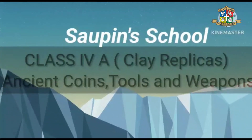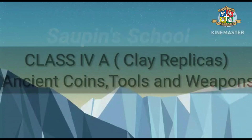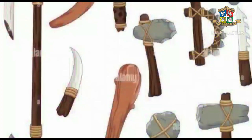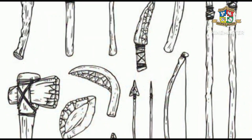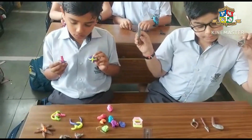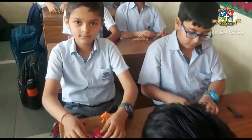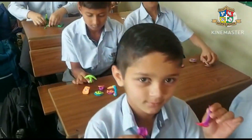Hello everyone, today we are going to learn something new about ancient coins. Although a number of coins and inscriptions have been found on the surface, many of them have been unearthed by digging. The study of coins is called numismatics, and students of class 4 made ancient coins, tools, and weapons with the help of clay.